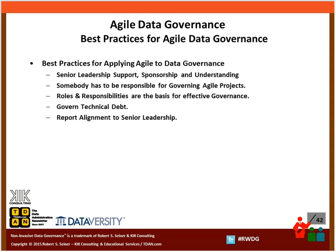When I talk about best practices around data governance, I talk about five things: we need senior leadership support, sponsorship, and understanding. But let's extend that now beyond data governance to the relationship between agile and data governance, and get senior leadership to understand that yes, these things are both necessary, but they can't operate in their own little utopian environments — they really need to come together. Somebody has to have the responsibility for making certain that governance is being applied to agile projects. Roles and responsibilities are the basis for both an effective governance program and an effective agile project.